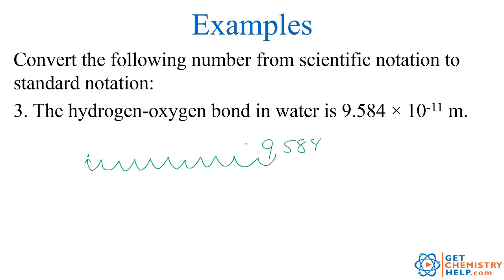So every position here has to be filled in with a 0. So 2, 3, 4, 5, 6, 7, 8, 9, 10. And just for clarity's sake, I'll put in the 0 here in the front too. So 0.0000000009584 is the same as 9.584 times 10 to the negative 11th.